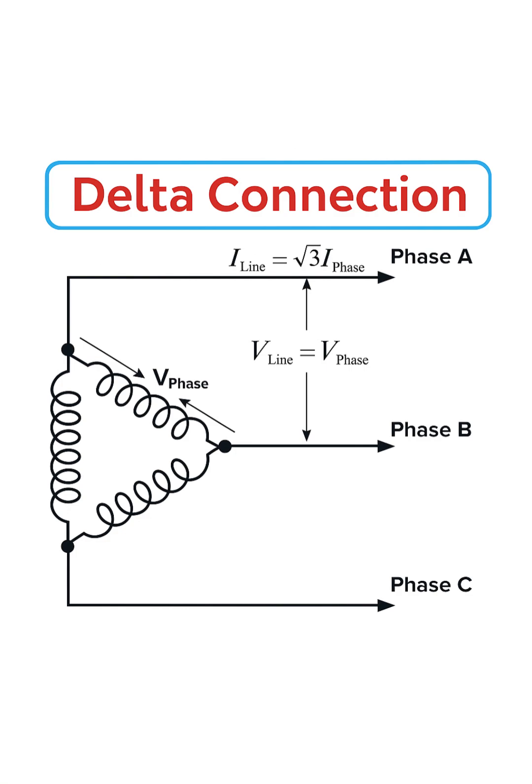In this setup, we again have three coils or windings, one for each phase: phase A, phase B, and phase C.